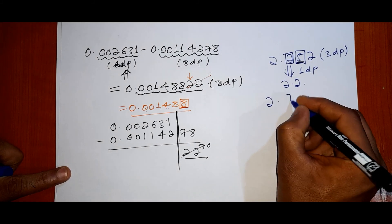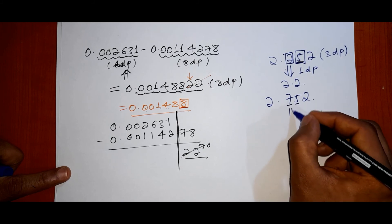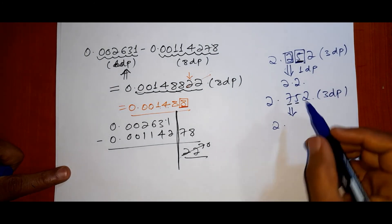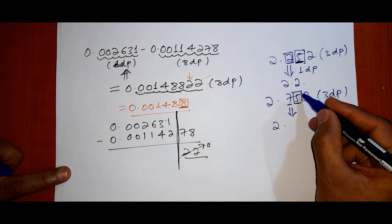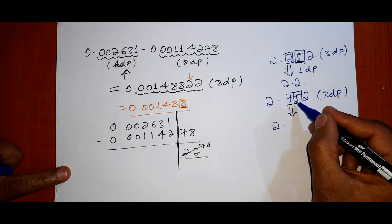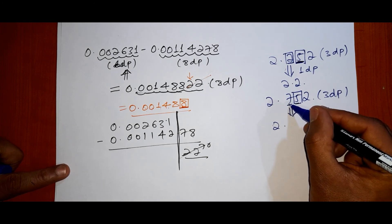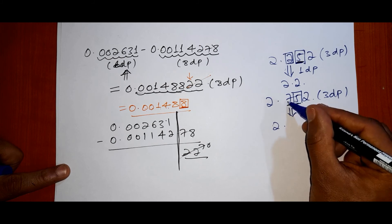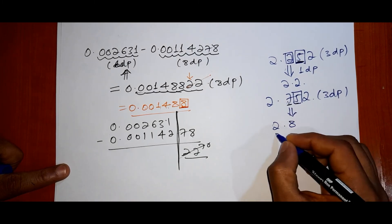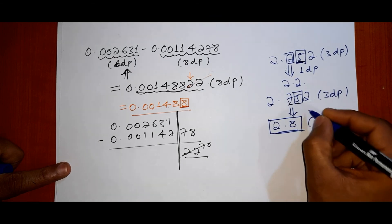Another example: 2.75 rounded to one decimal place — the digit before 5 is 7, which is odd. The nearest even number to 7 is 8. So the result becomes 2.8. When the dropped digit is exactly five and the preceding digit is odd, we round up to make it even.